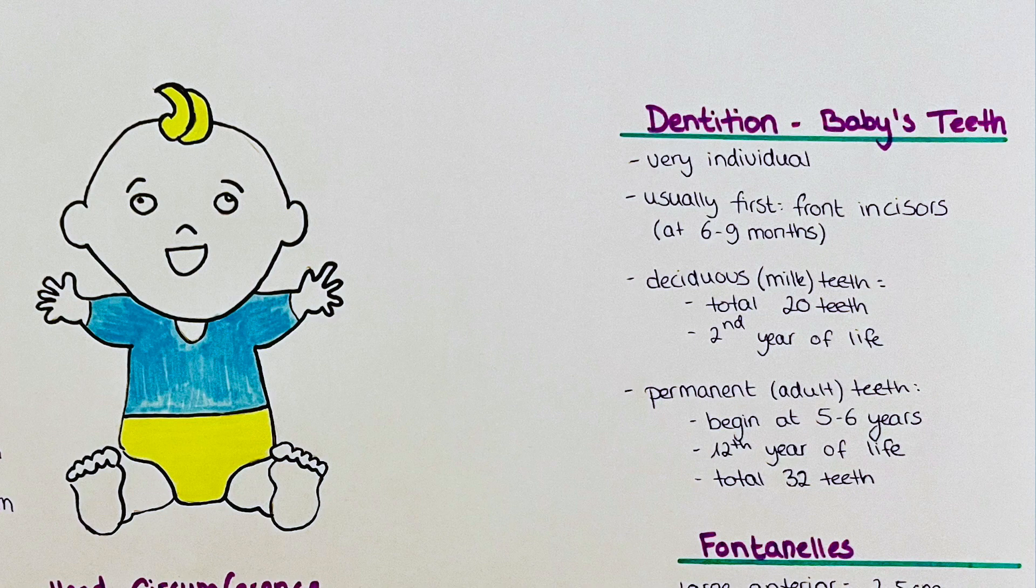These are the deciduous teeth, also known as the milk teeth, and they are 20 in number. Usually they will all be erupted by the end of the second year of the child.